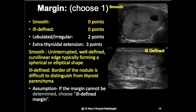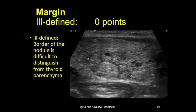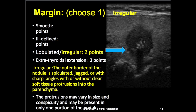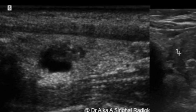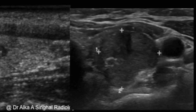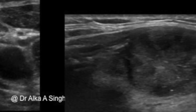For margins: smooth gets zero points; ill-defined gets zero points; lobulated or irregular gets two points; and extrathyroidal extension gets three points. Smooth margin is defined as an uninterrupted, well-defined curvilinear edge. Ill-defined is when it's difficult to ascertain — if it cannot be ascertained, we choose ill-defined and assign a score of zero. Irregular or lobulated margins in even a focal area get a score of two. Extrathyroidal extension, such as infiltrating the strap muscles, gets a score of three.